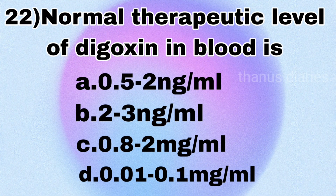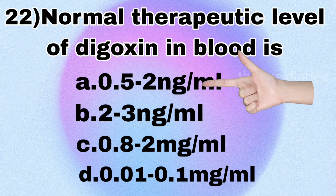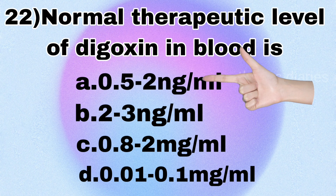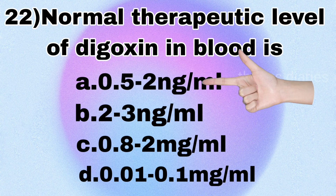Next question: the normal therapeutic level of digoxin in blood is — 0.5 to 2 nanogram per ml, 2 to 3 nanogram per ml, 0.82 mg per ml, or 0.01 to 0.1 mg per ml? The answer is 0.5 to 2 nanogram per ml.